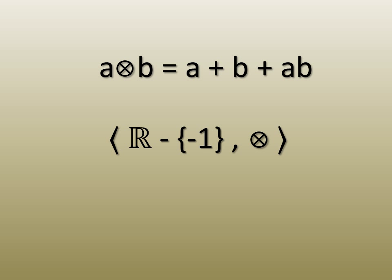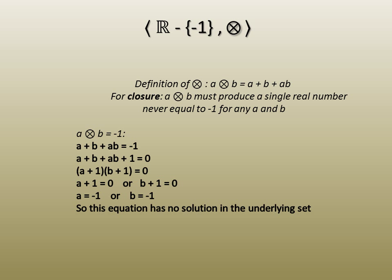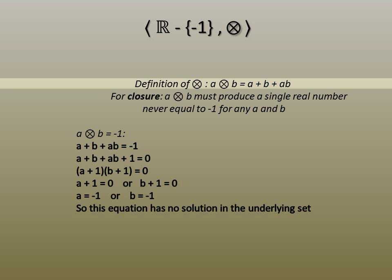We begin by establishing closure. The operation would have to produce a single real number. Looking at the definition, it is clear that the operation when given two real numbers won't return more than one real number. For closure, though, we have to prove that it can't return negative one. So, we set up an equation where A operated on B does return negative one and investigate the solutions.